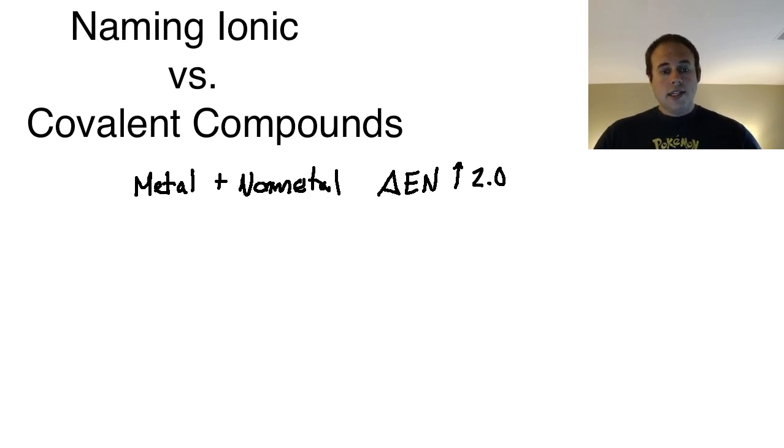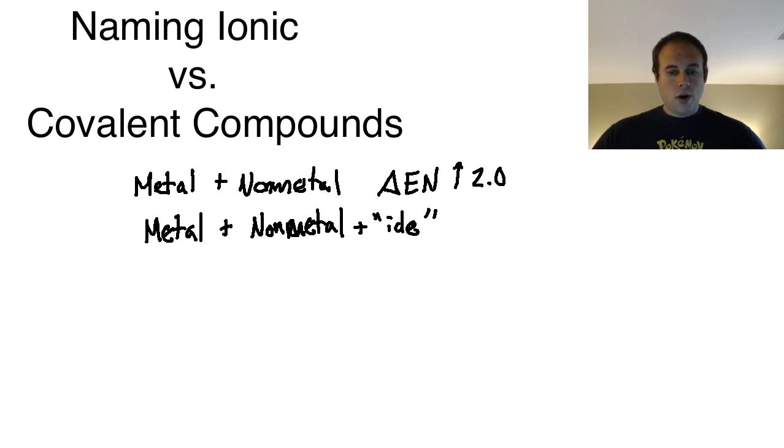How do I name ionic compounds? When you get ready to name them, you're going to name them with just the name of the metal, no matter how many of that metal is currently there. Then for the second portion, whatever you're pairing with your metal—your non-metal—you are going to write the name of the non-metal, then drop the very last portion of the non-metal name and add the term "-ide."